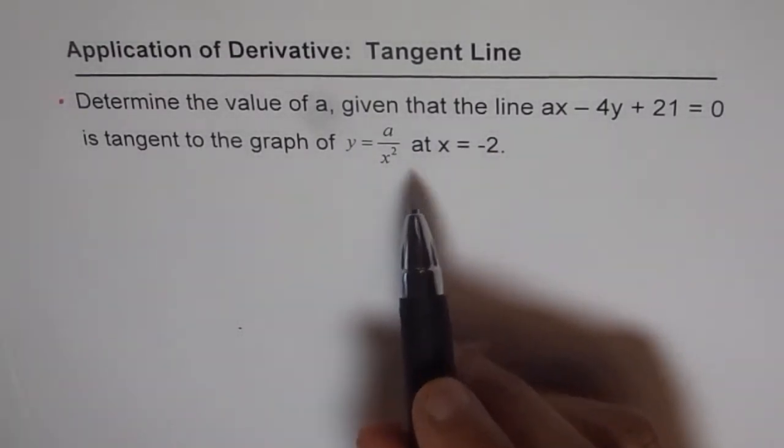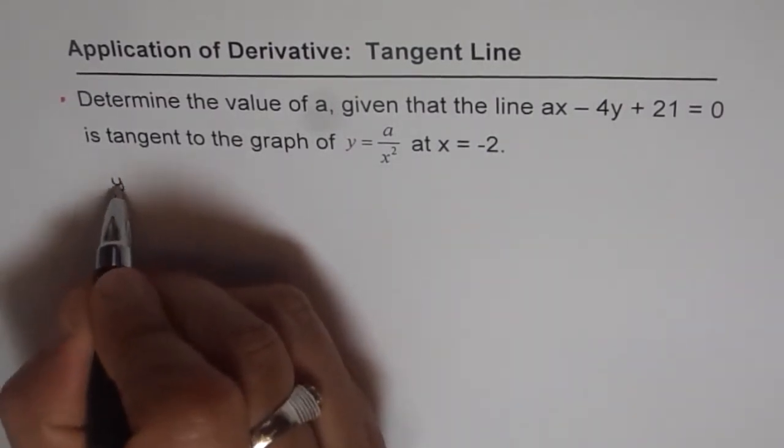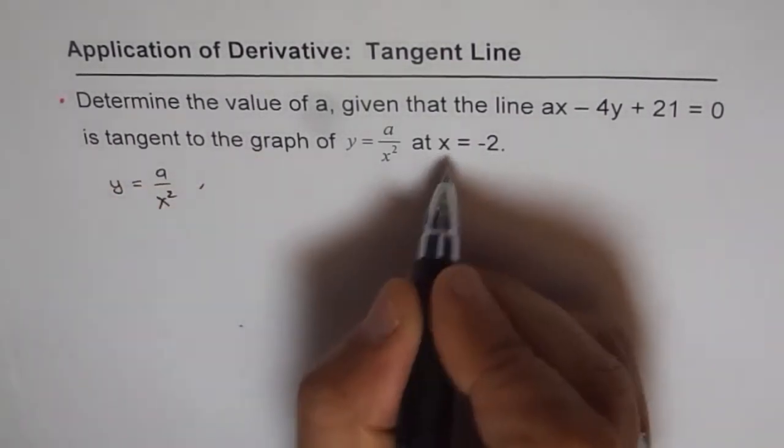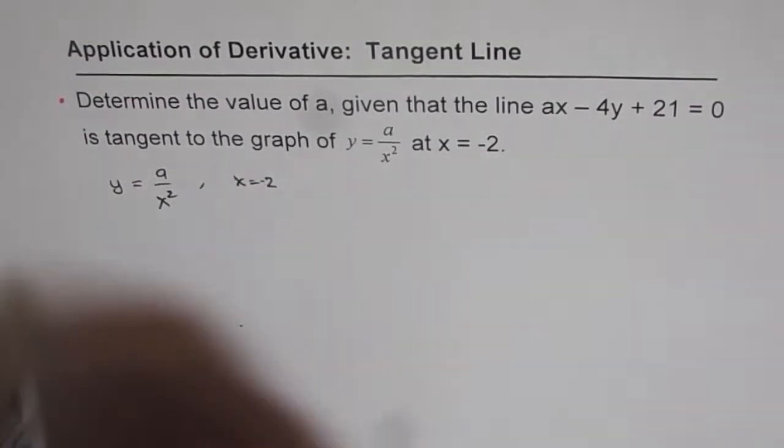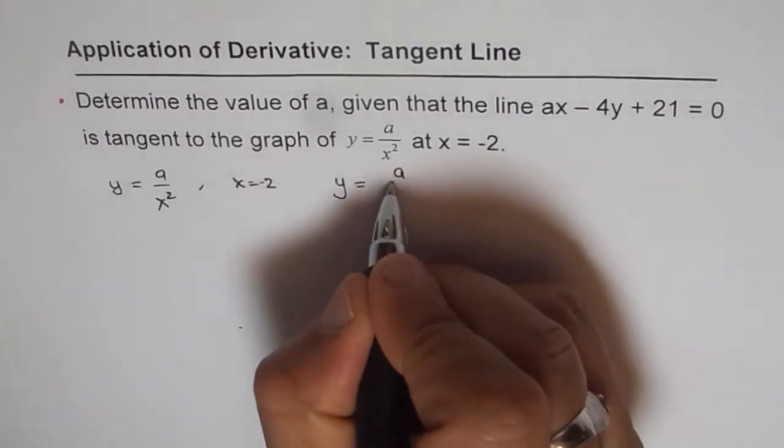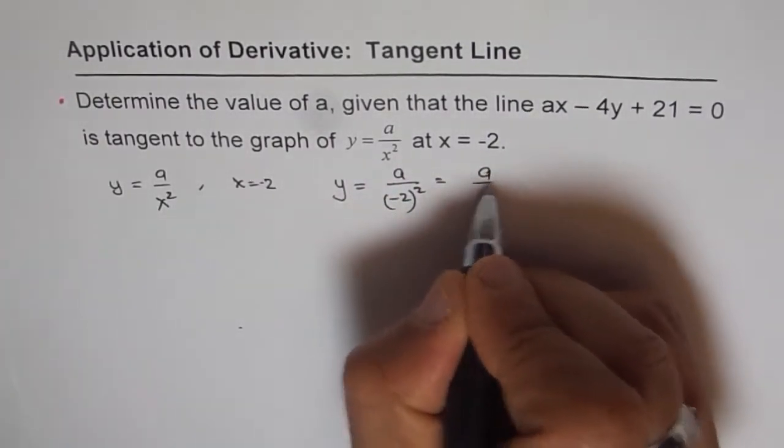So we are going to use that as a strategy to solve our problem. So we have Y equals A over X square. Now if X equals minus 2, what is the value of Y? In that case, Y will be equals to A over minus 2 square, right? That gives us the value A over 4.